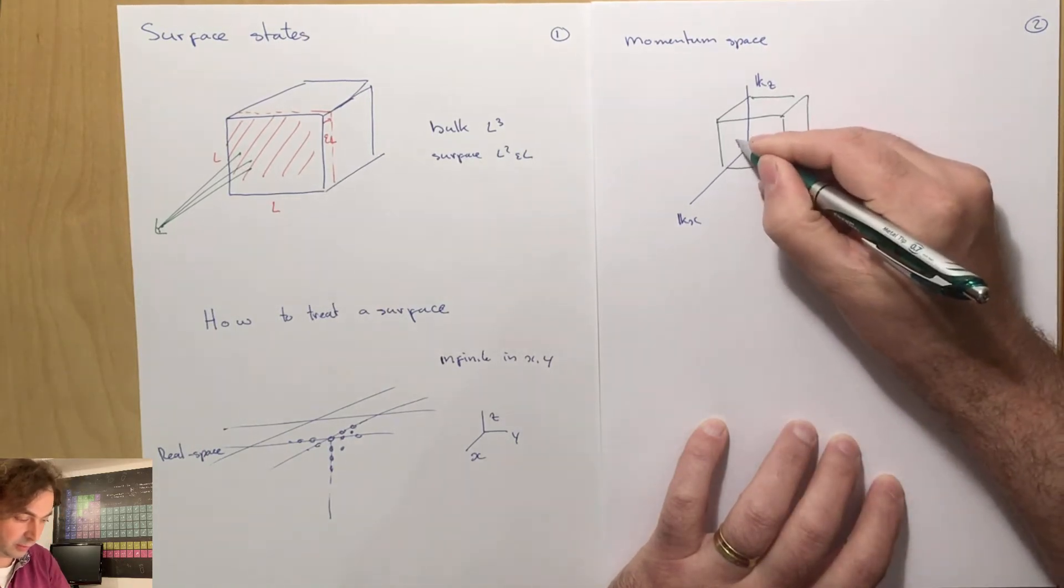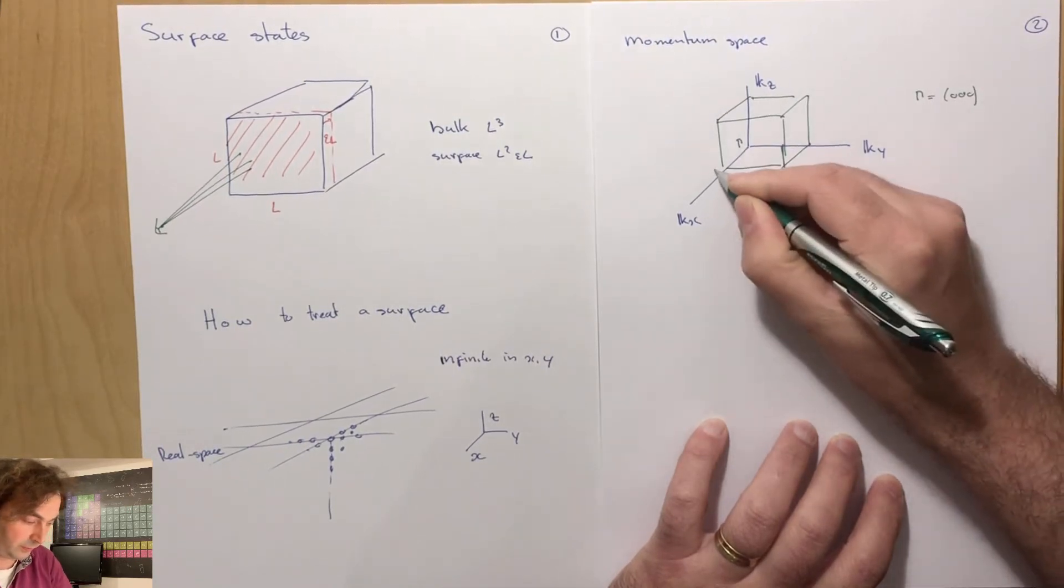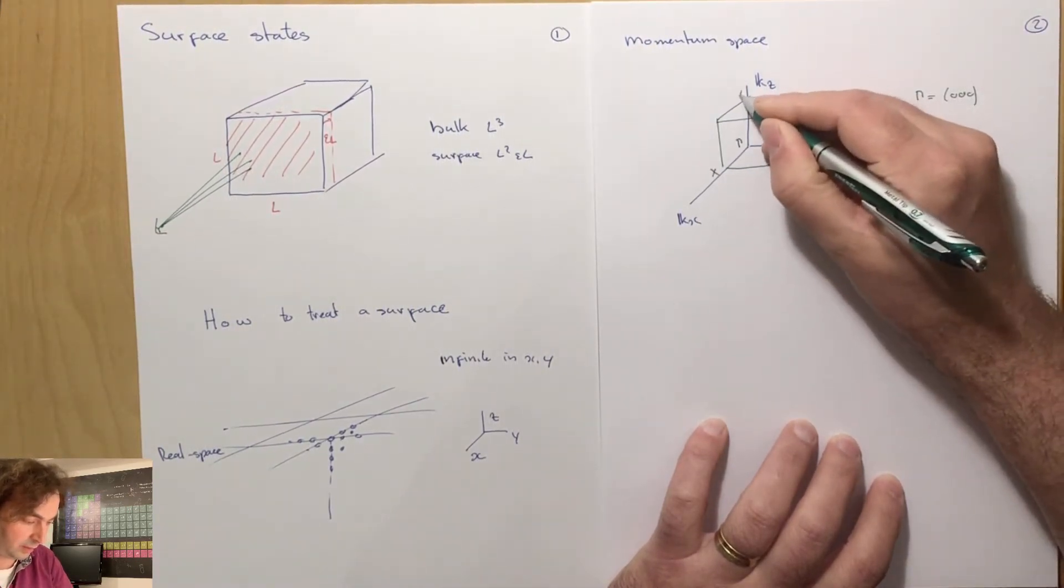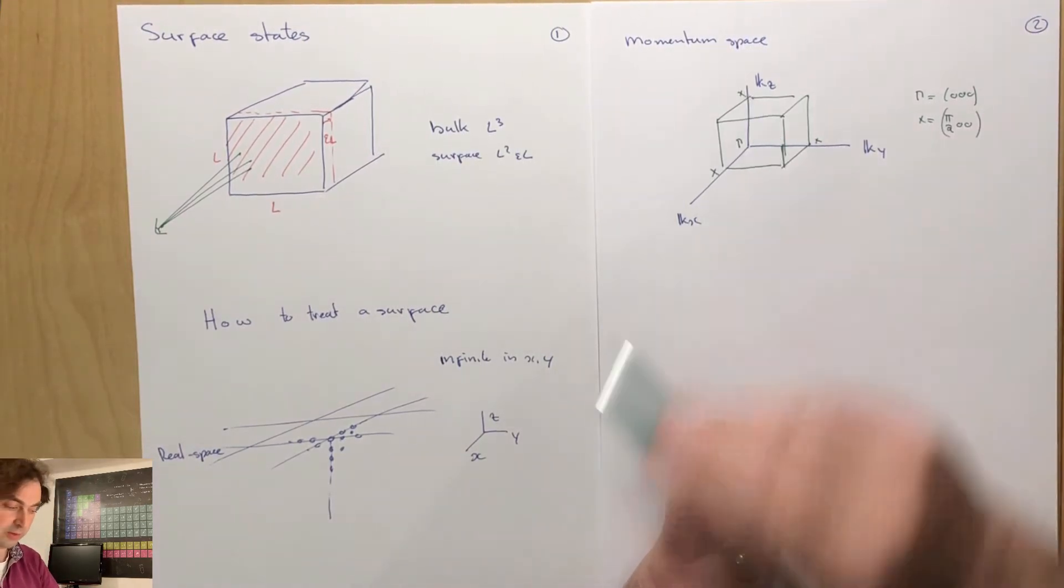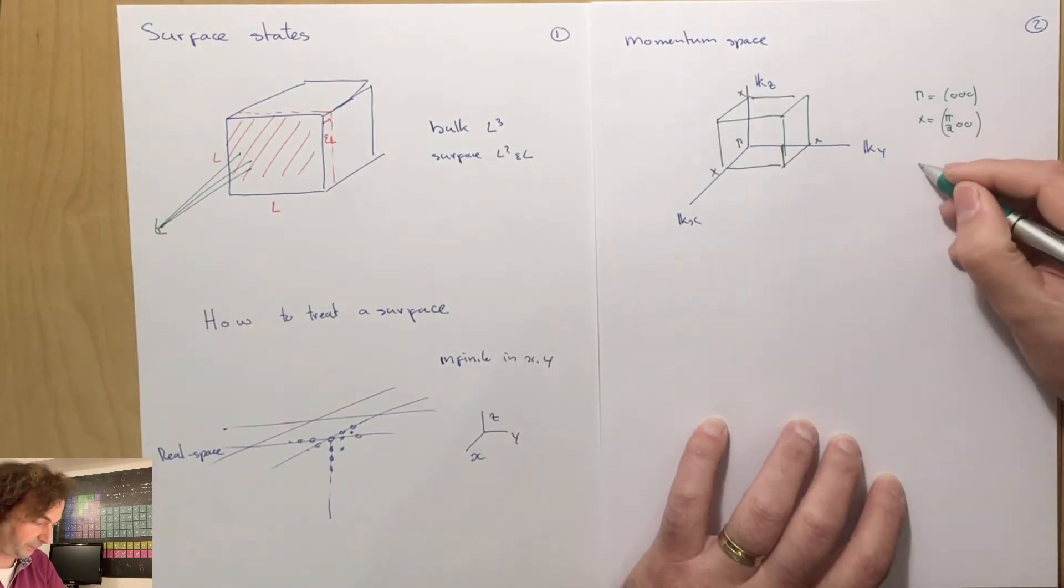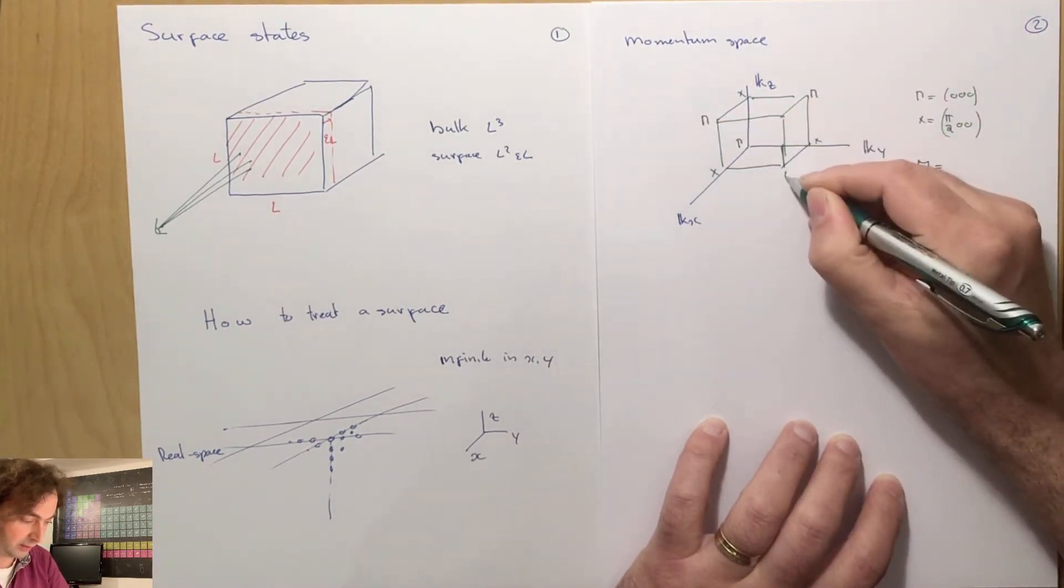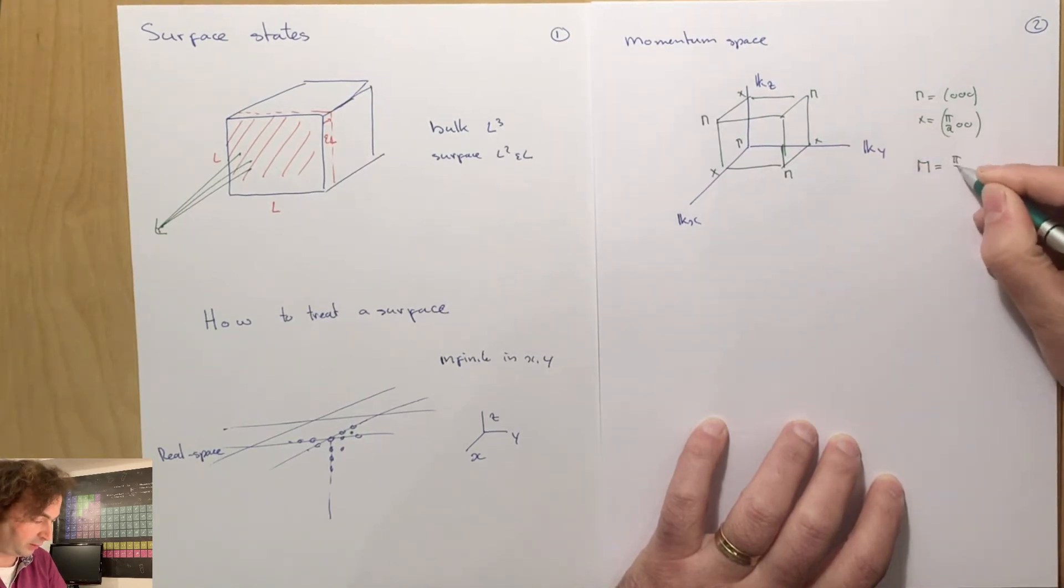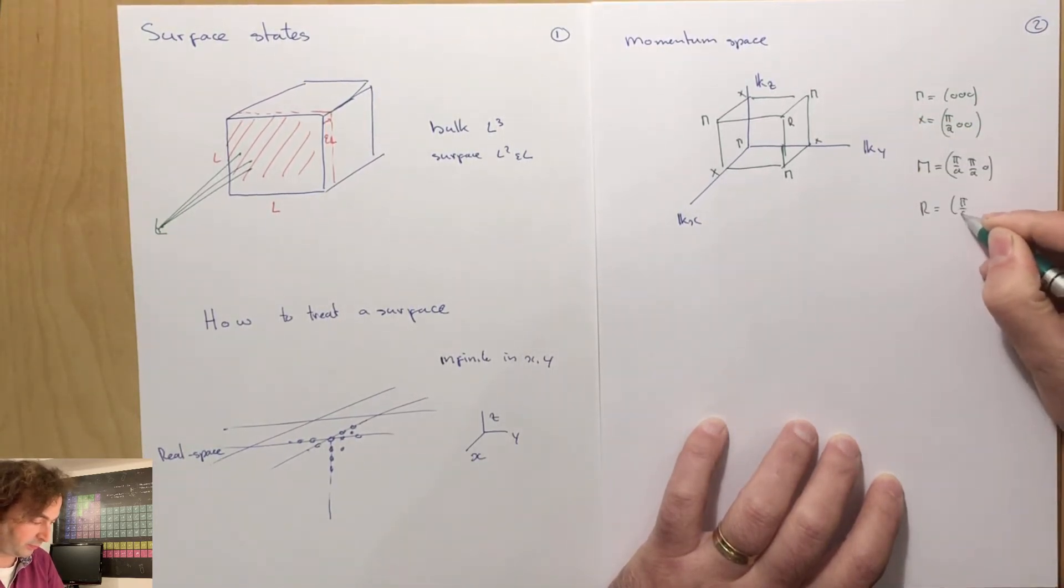We have our special points: gamma at zero, zero, zero; the X-point given by pi over a, zero, zero, or zero, pi over a, zero, or zero, zero, pi over a; the M-point which sits at pi over a, pi over a, zero; and the R-point at the corner at pi over a, pi over a, pi over a.